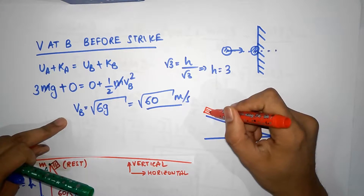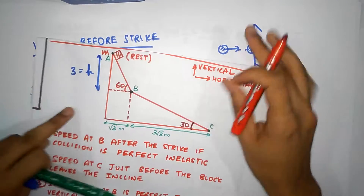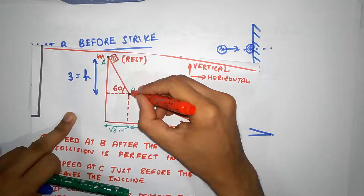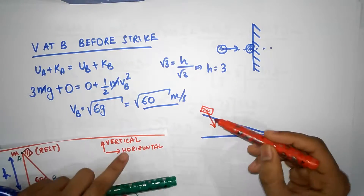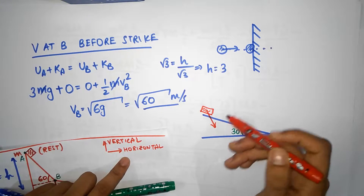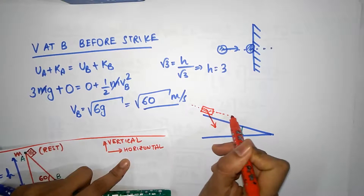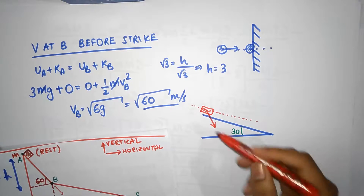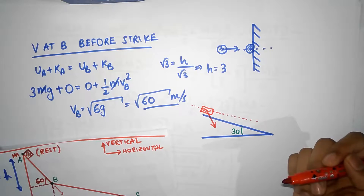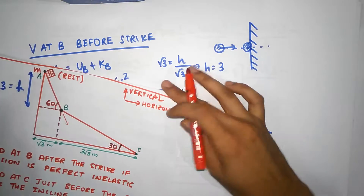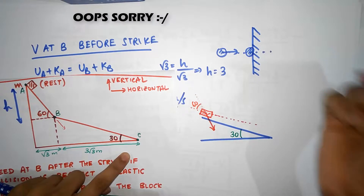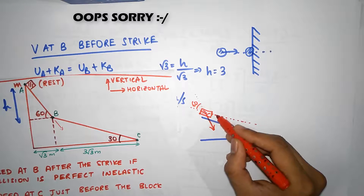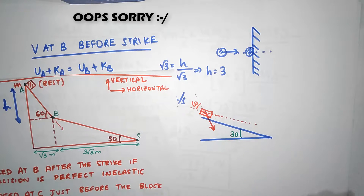So I need to calculate the angle and decompose the velocity. We know that the angle of the incline is 60 degrees from the vertical, so this angle is also going to be 60 degrees — the whole angle is 60. That means we can decompose this velocity.